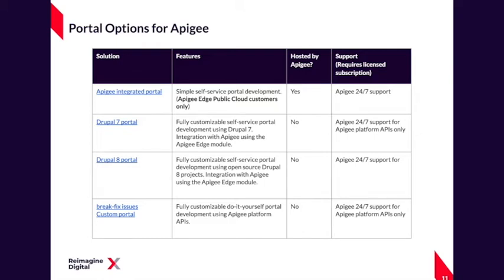The first option is the Apigee integrated portal, available out of the box with your Apigee account. As you build out the APIs, it's essentially an auto-generated portal for you. They also have two Drupal solutions: Drupal 7, which has just been deprecated with the sunsetting of Drupal 7, and a Drupal 8 solution which is fully supported. There is also a D9 alternative coming out soon. And of course, being an API gateway, they have their own gateway so that you can build your own custom API-driven customer portal from scratch.